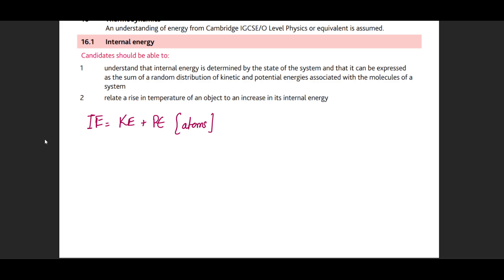In specific definitions, internal energy refers to random kinetic energy and potential energies. In physics, potential energy can mean gravitational potential energy, chemical potential energy between bonds, or elastic potential energy — for example, ½kx² in AS-level. In this context, potential energy refers to the number and strength of bonds, while random kinetic energy refers to the kinetic energy of the atoms themselves, not the whole system.